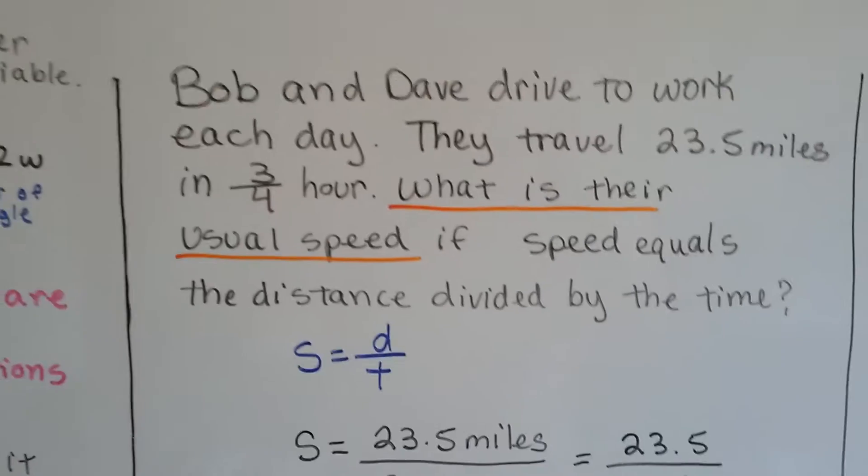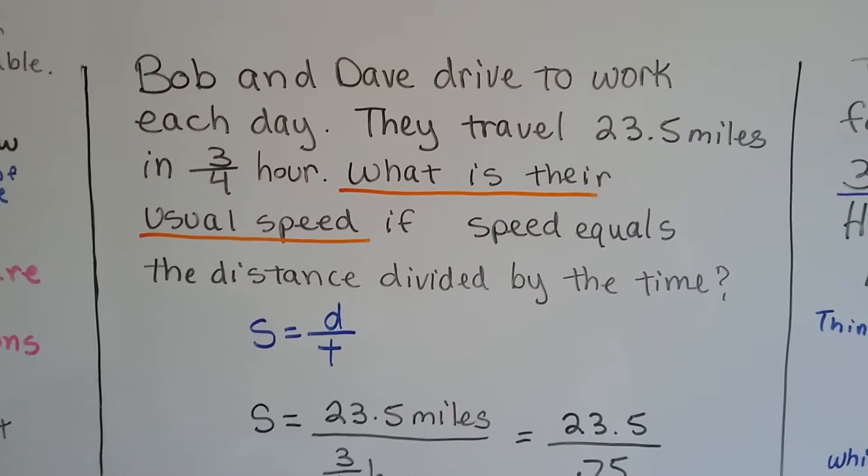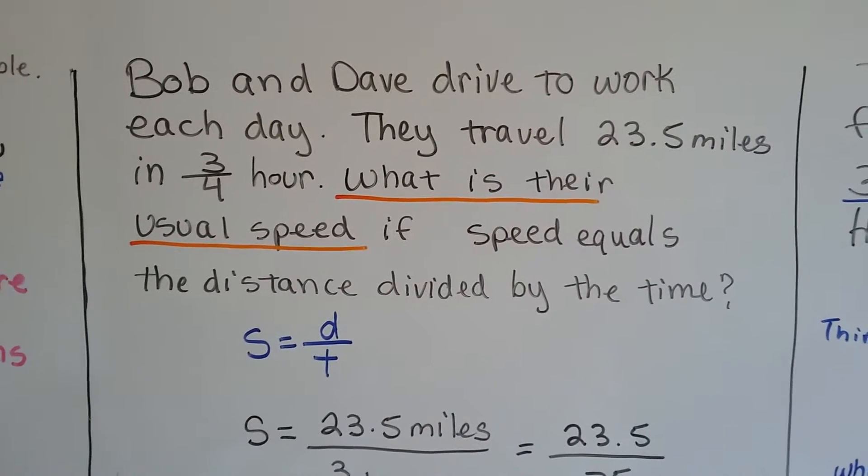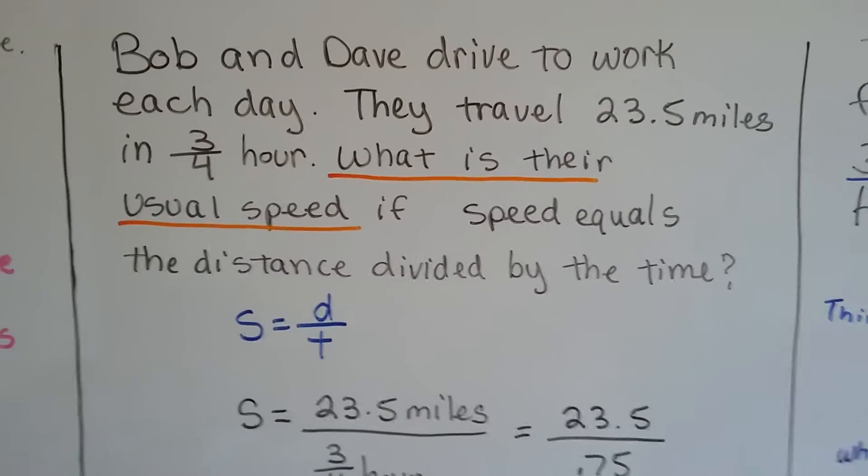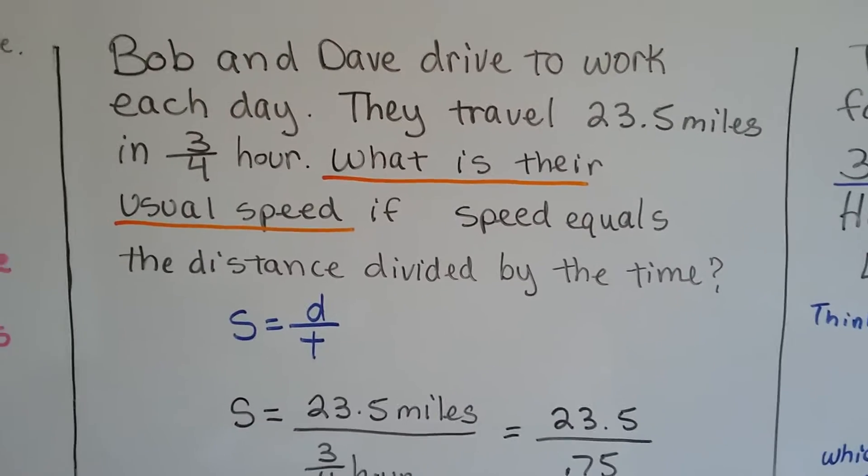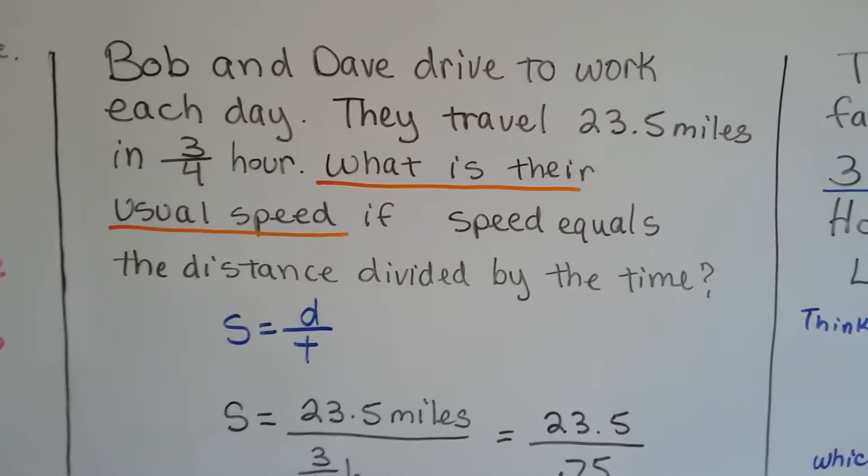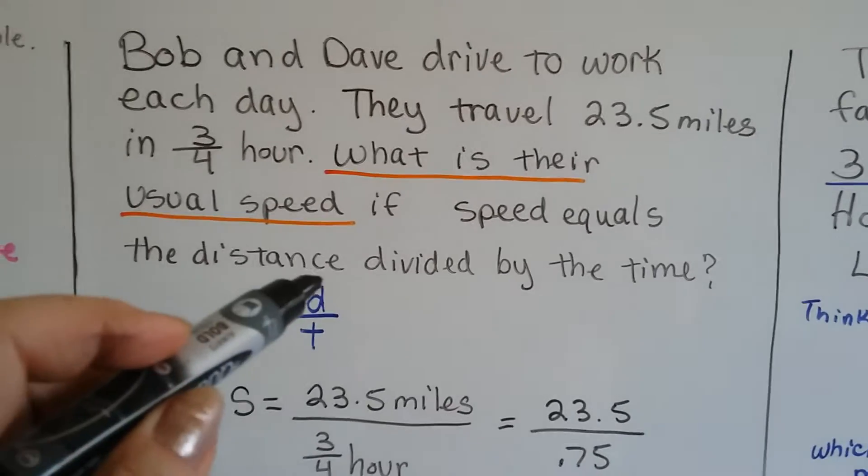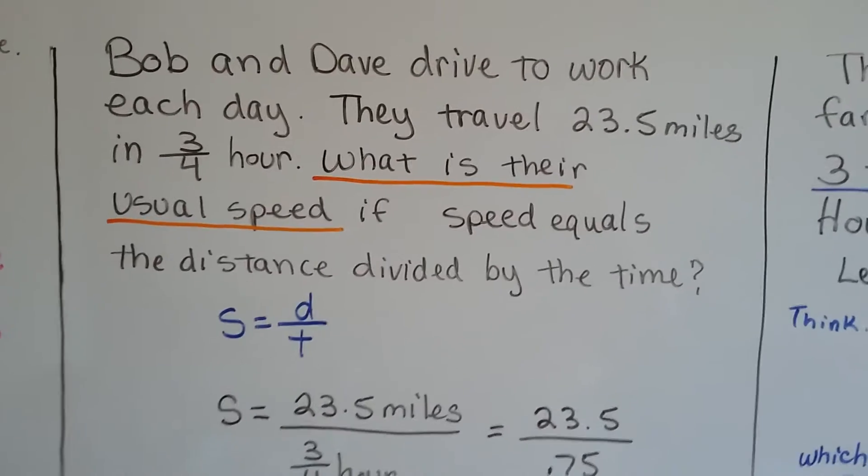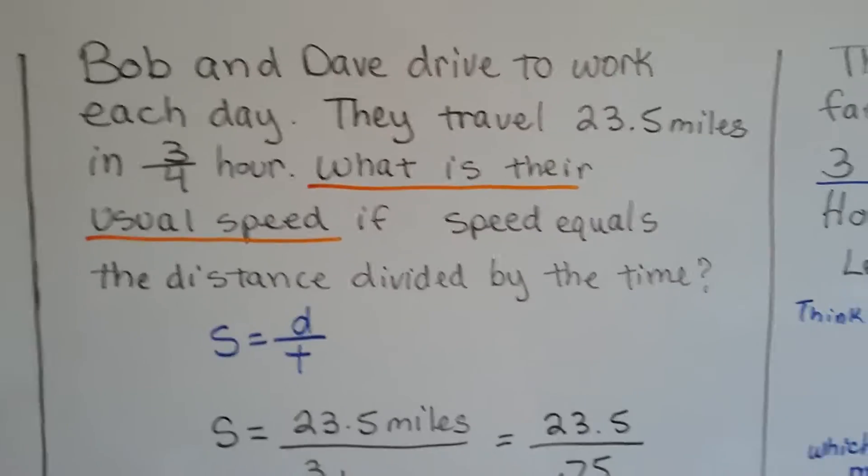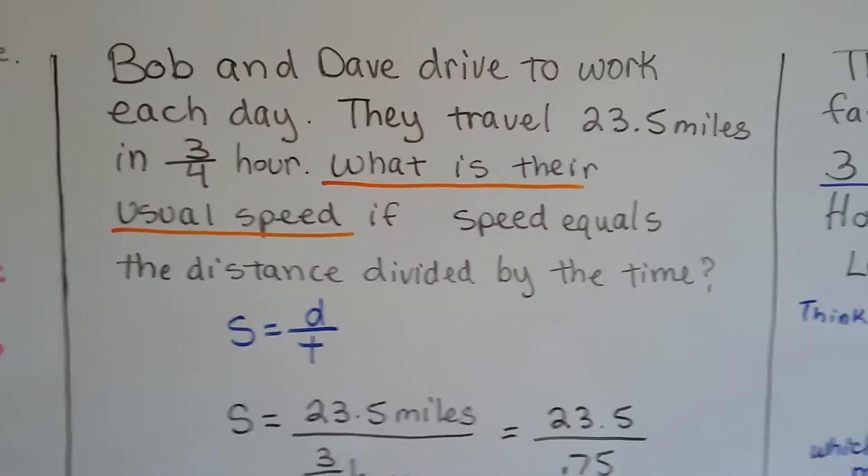Let's try this one. Bob and Dave drive to work each day and they travel 23.5 miles in 3 fourths of an hour. What is their usual speed? If speed equals the distance divided by the time. Speed equals the distance divided by the time. That's the formula.